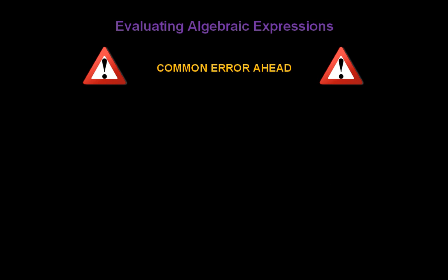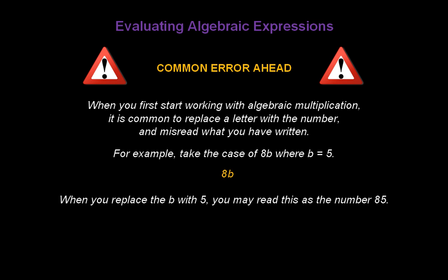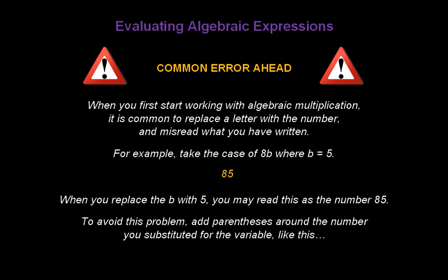Here's a warning — common error ahead. When you first start working with algebraic multiplication, it's common to replace a letter with a number, but you may misread what you've written. Take the case of 8b — we know 8b means eight times b. If we replace b with 5, you might read it as the number 85, not eight times five. To avoid this problem, add parentheses around the number you substituted for the variable. When you do that, it won't be mistaken for 85.